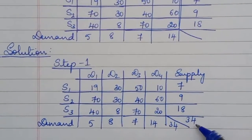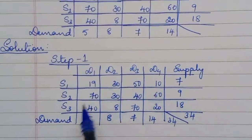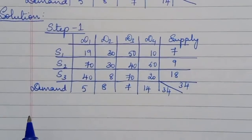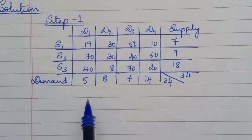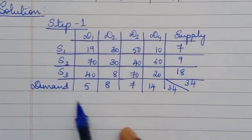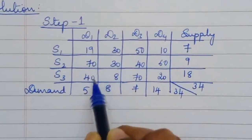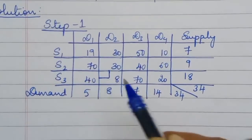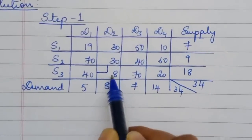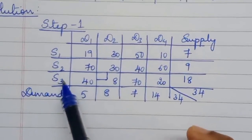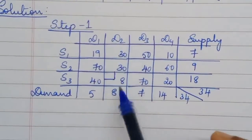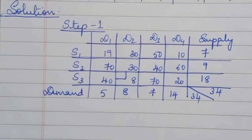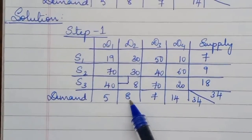The sum of supply is 34 and the sum of demand is 34, so the transportation problem is balanced. In the least cost method you choose the cell which has the least cost for the allocation. Here, cell S3-D2 has the least cost in the cost matrix.